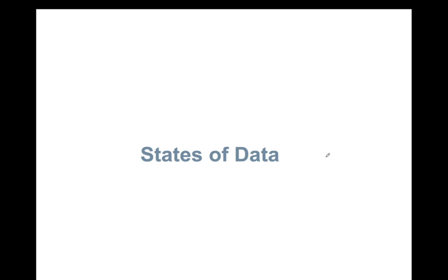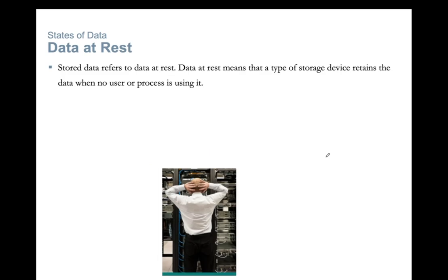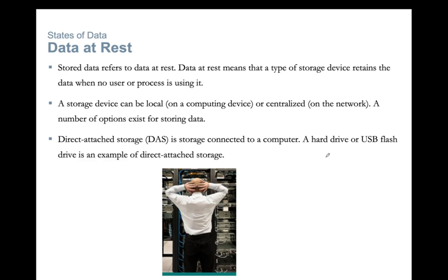Stored data refers to data at rest. Data at rest means that a type of storage device retains the data when no user or process is using it. Your storage device can be local on a computing device or centralized on a network. A number of options exist for storing data.